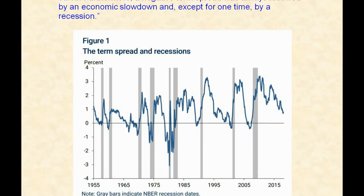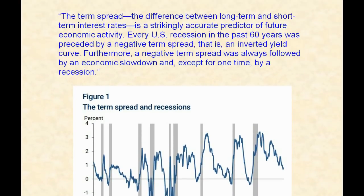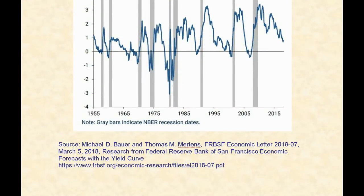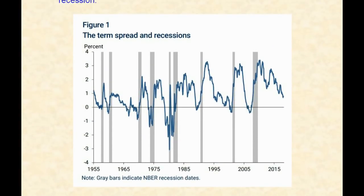Let's take a look at that — this is also from the San Francisco Federal Reserve. The gray bars here are recessions throughout the years in the United States. This blue line represents the difference in percentage points between the 10-year and the two-year bond yields. We can see when it dips — when it gets down to zero, it's a flattened yield curve, which is strange. And when it gets into negative territory, that's the really strange situation of the inverted yield curve.